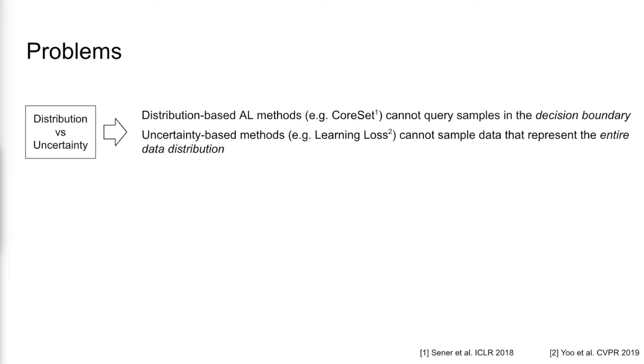Existing active learning methods are largely divided into distribution-based or uncertainty-based methods. Distribution-based methods have difficulty querying samples in the decision boundary, whereas uncertainty-based methods struggle to sample data that represent the entire data distribution.